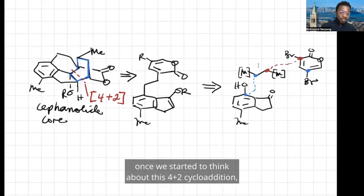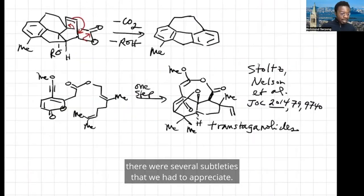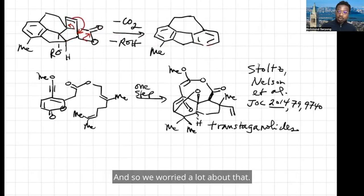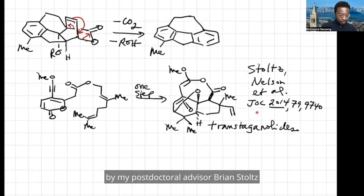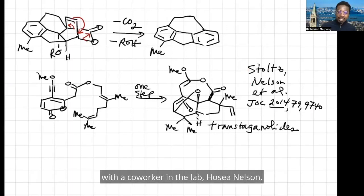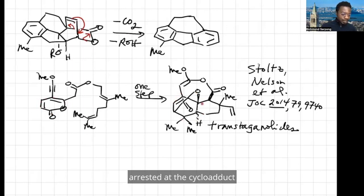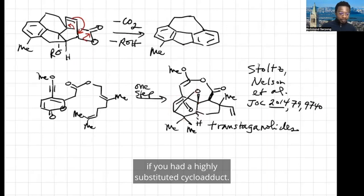And so, of course, once we started to think about this 4+2 cycloaddition, there were several subtleties that we had to appreciate. The first of which was that these types of 4+2 cycloaddicts could be prone to undergoing a decarboxylation, and so we worried a lot about that. But I was reminded by a paper by my postdoctoral advisor Brian Stoltz, working at the time with a co-worker in the lab, Jose Nelson. What they had shown was that pyrone cycloadditions could, in essence, be arrested at the cycloadduct without undergoing decarboxylation if you had a highly substituted cycloadduct.